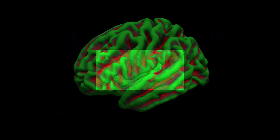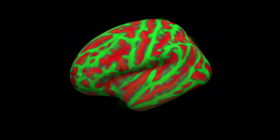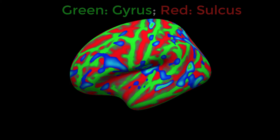These surfaces can then be inflated. This allows you to better visualize where fMRI activations and gray matter differences are located along the gyri and sulci of the brain.